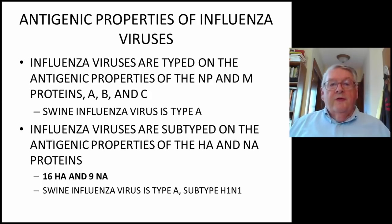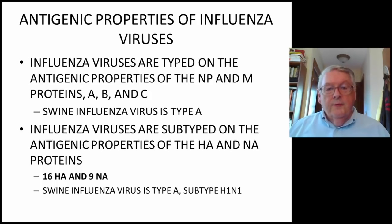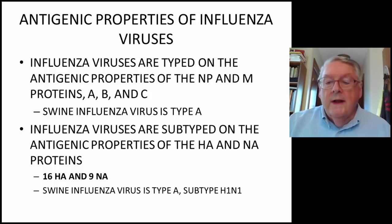Influenza viruses are typed on the basis of the antigenic properties of the nucleocapsid protein and the membrane proteins, and they are typed A, B, and C. A and B cause disease in people. C is a minor entity in terms of human infection, but it is involved in other infections. Swine influenza viruses are type A. Influenza viruses are subtyped by the antigenic properties of the HA and NA proteins. There are 16 HAs and 9 NAs. The swine influenza virus is type A, subtype H1N1.